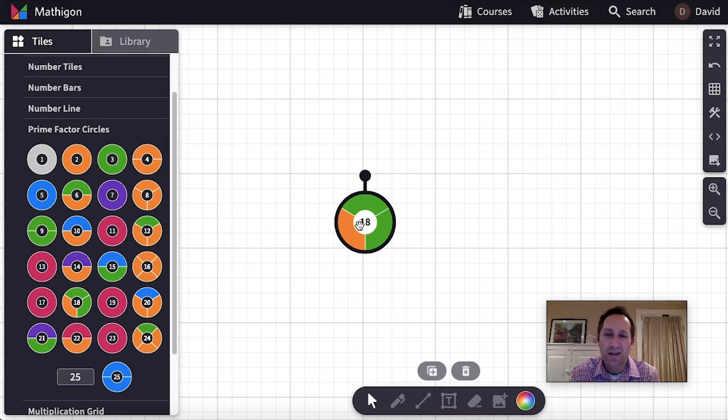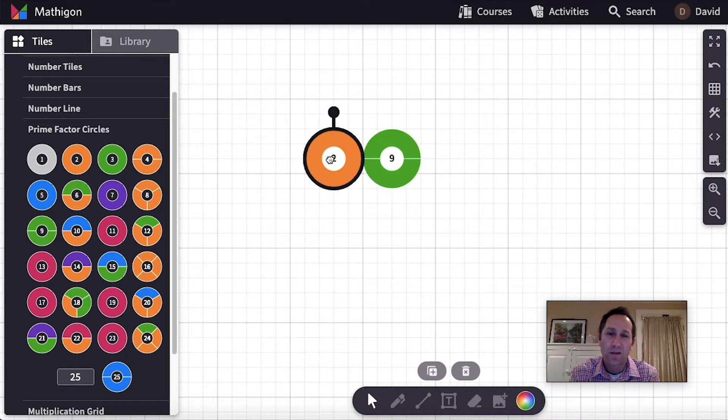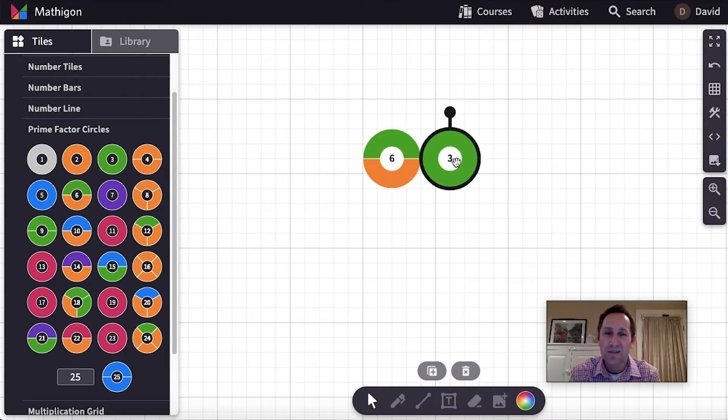They would understand how these work. If you take 18 and you drag the 2 and pull it apart, then you've made two numbers that multiply to give 18. 2 times 9 is 18. Or we can pull out the 3 and I could pull out another 3 and there's 2 times 9 again. Or we can show 3 times 6. So they would have spent some time with the prime factor circles.